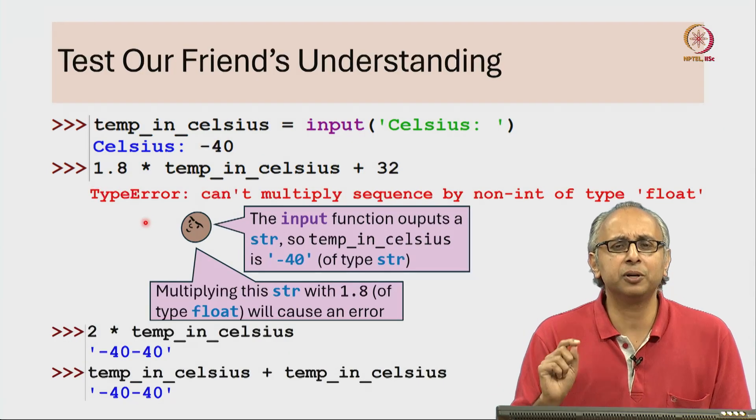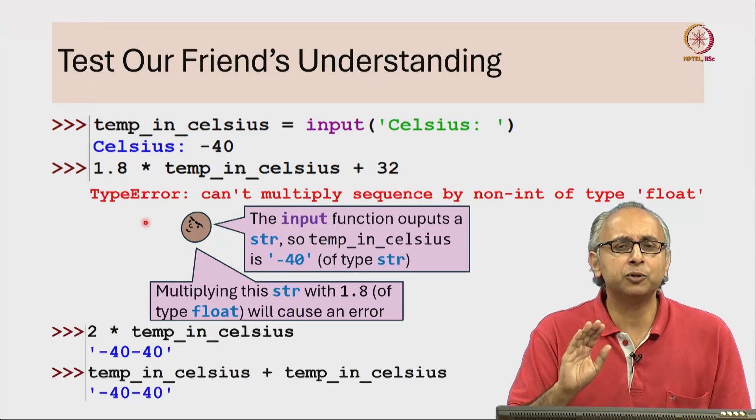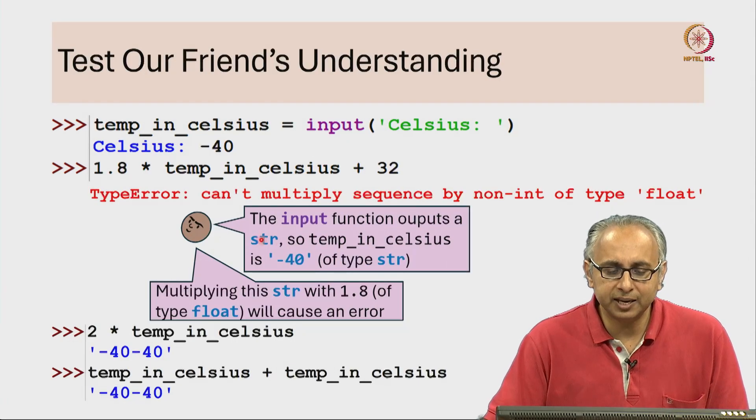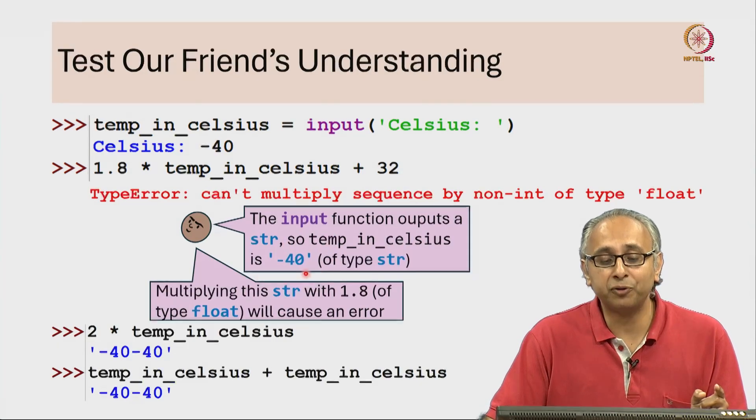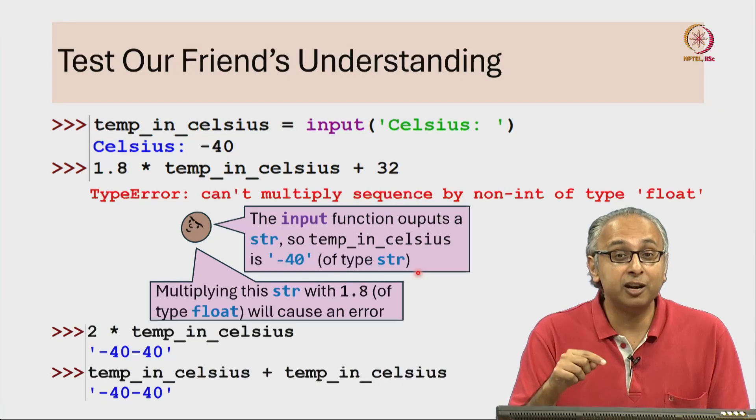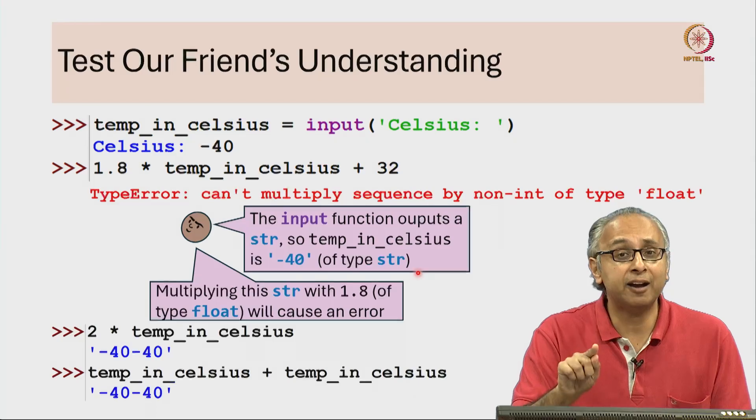There is a very small technical mistake in what our friend said, but we'll let this go. I'll just point out what that error is. Our friend said that temp_in_celsius, the variable, is of type str. Remember that technically variables don't have a type - the objects they are assigned to have a type.